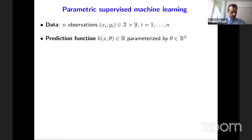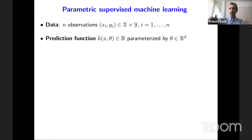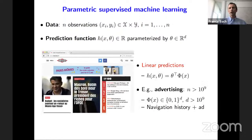I'm going to formalize the machine learning problem through classical notation. I assume observations (x_i, y_i), where x_i is an input — for example, an image — and y_i is the output to predict, typically a label. We observe N such pairs, where N could be thousands, millions, or billions. The goal is to predict a new y given an unseen x, through a prediction function H with two parameters: the input x and a parameter theta of dimension D, which is typically quite large.